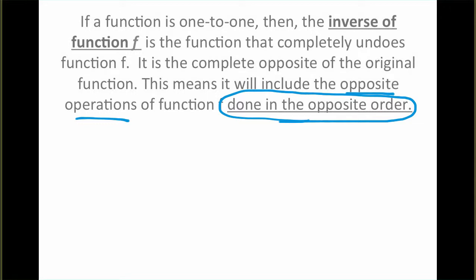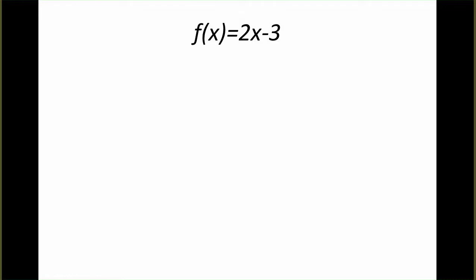In this video, we are going to look at finding inverses to functions when we're given the equation. First, we'll look at how to do that using this idea of the opposite operation in the opposite order, but then we'll also look at a method to do so algebraically. If you look at this function, what we want to think about are what operations are being done to x. The first thing that we would do is multiply that value by 2, and then we would subtract 3.